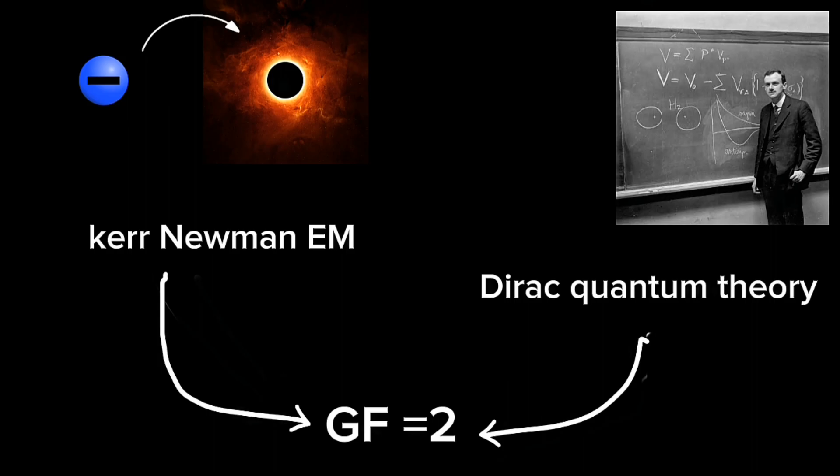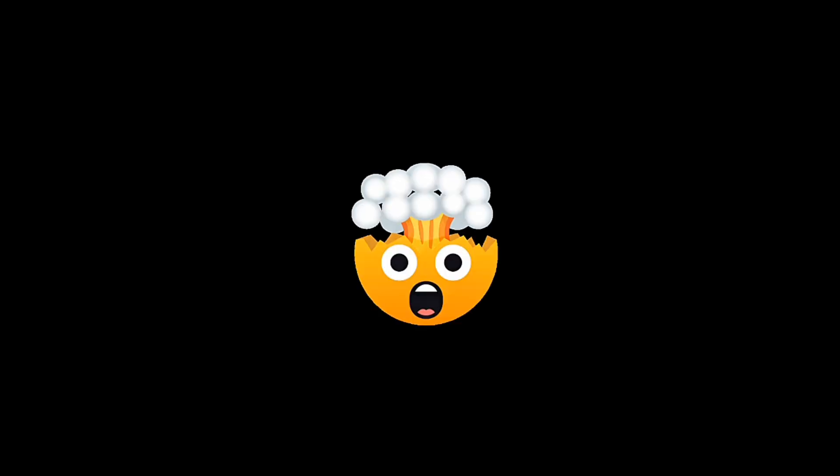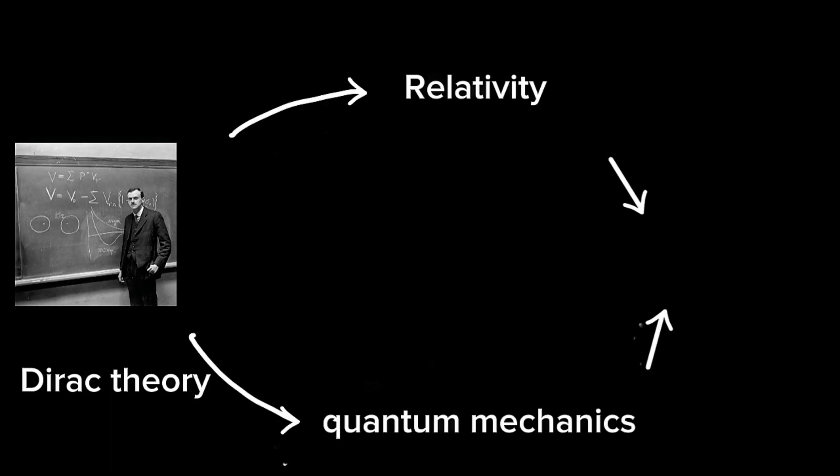For the Kerr-Newman electron model to work, it should also predict exactly the g-factor of two. To my surprise, it does predict exactly the g-factor of two which the Dirac relativistic quantum theory predicts. It is one of the most mind-blowing things ever.